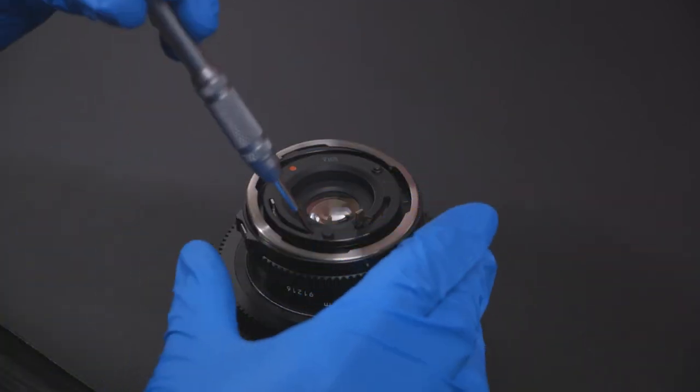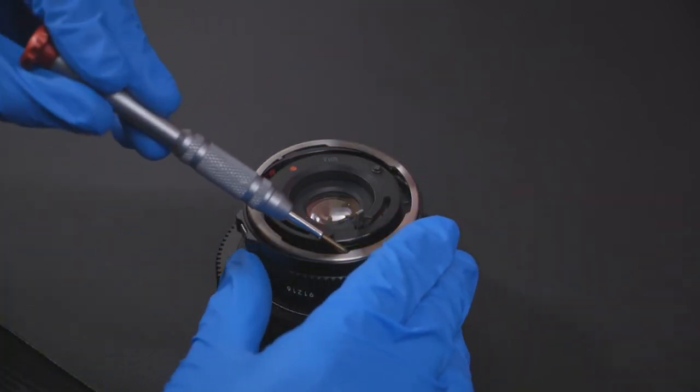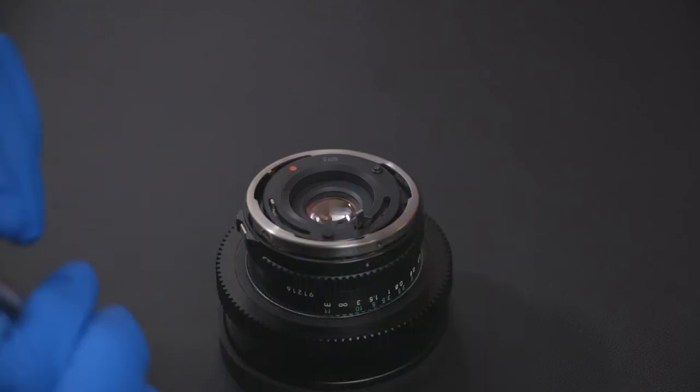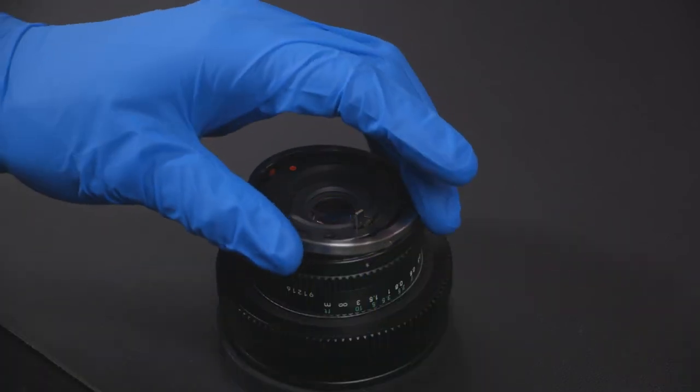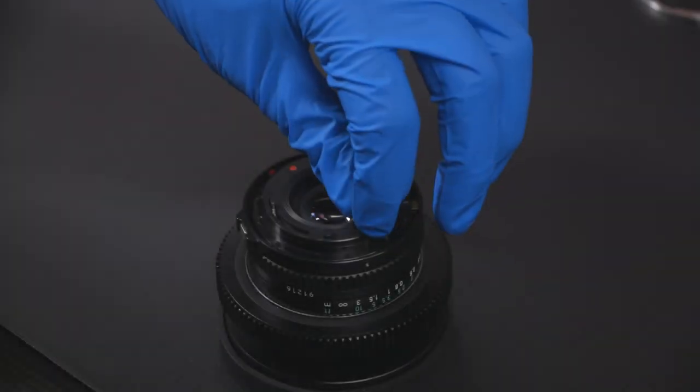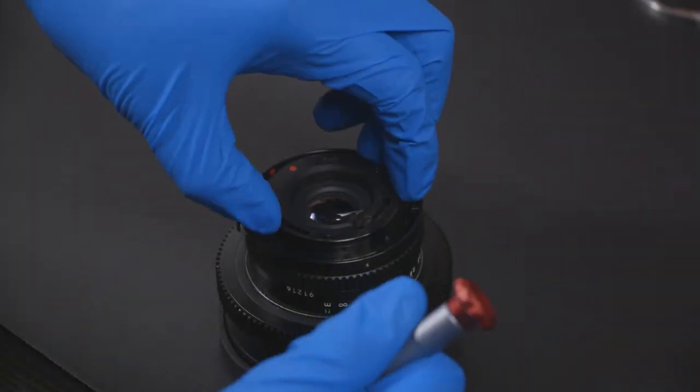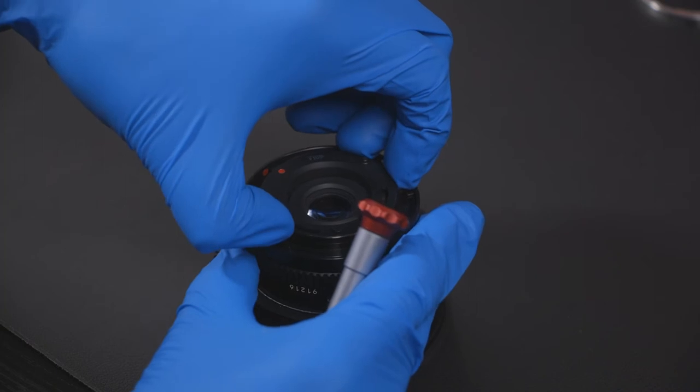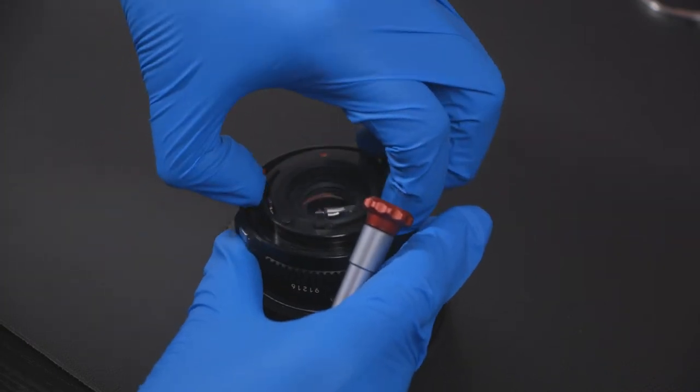Next, remove the chrome ring that sits at the end of the lens. Twist and lift to remove the FD mount from the lens.